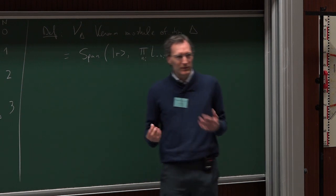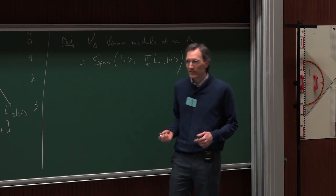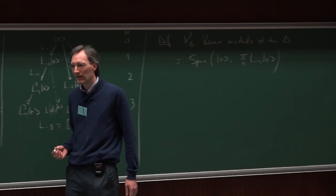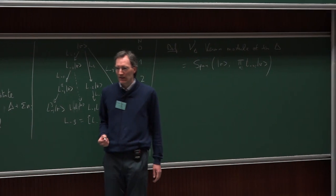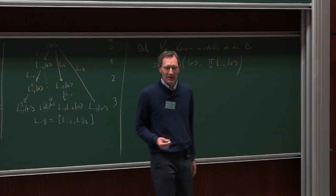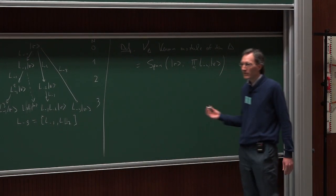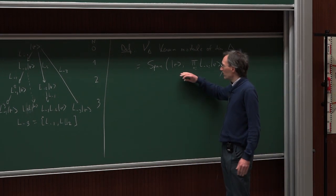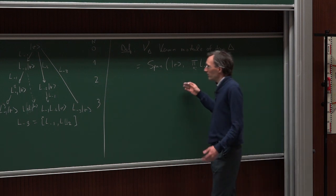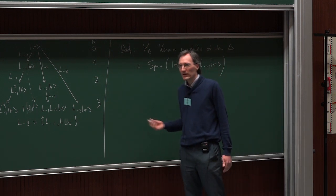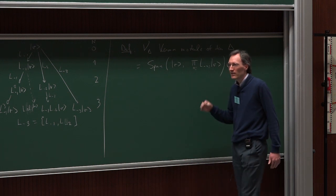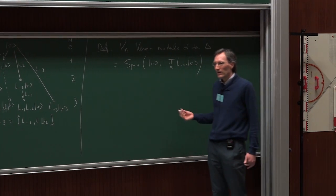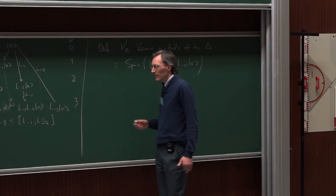To know if the Verma module is irreducible, we must determine whether it has null vectors. The Verma module exists for any Δ — one just needs to show the states are linearly independent, which they are in general.